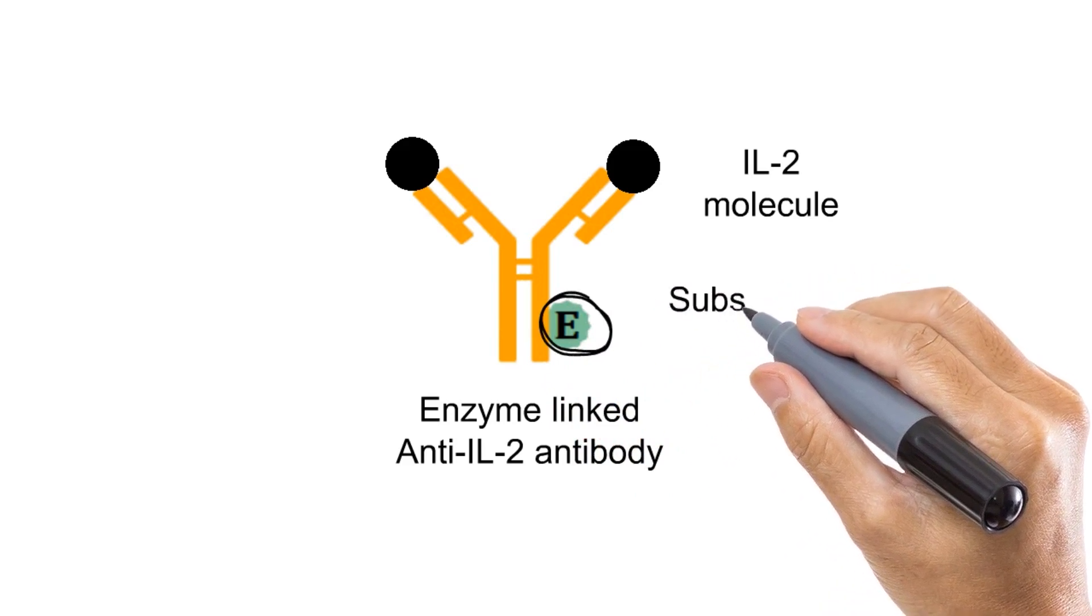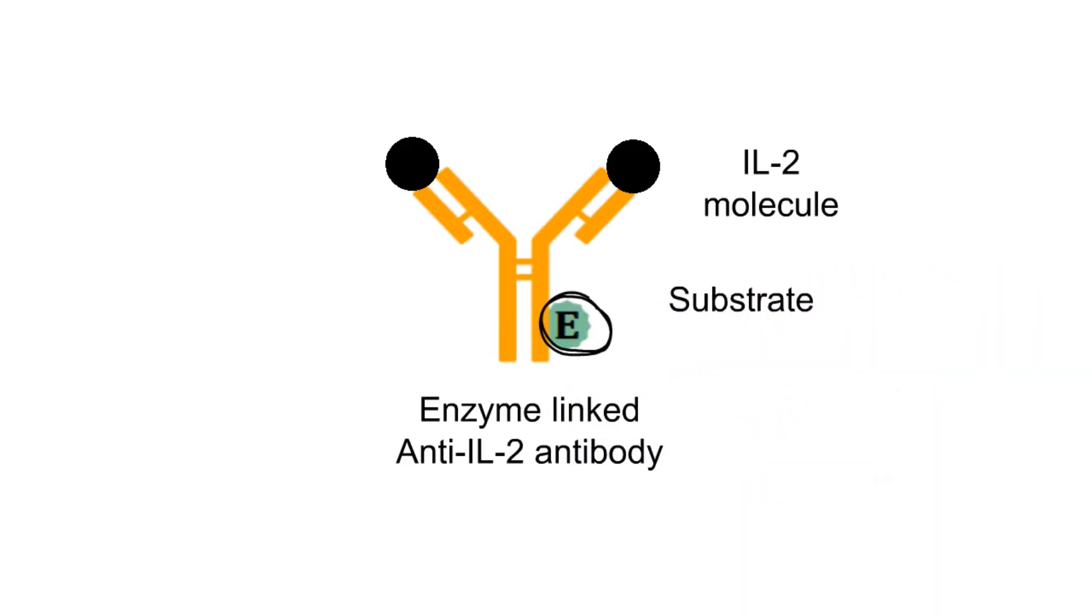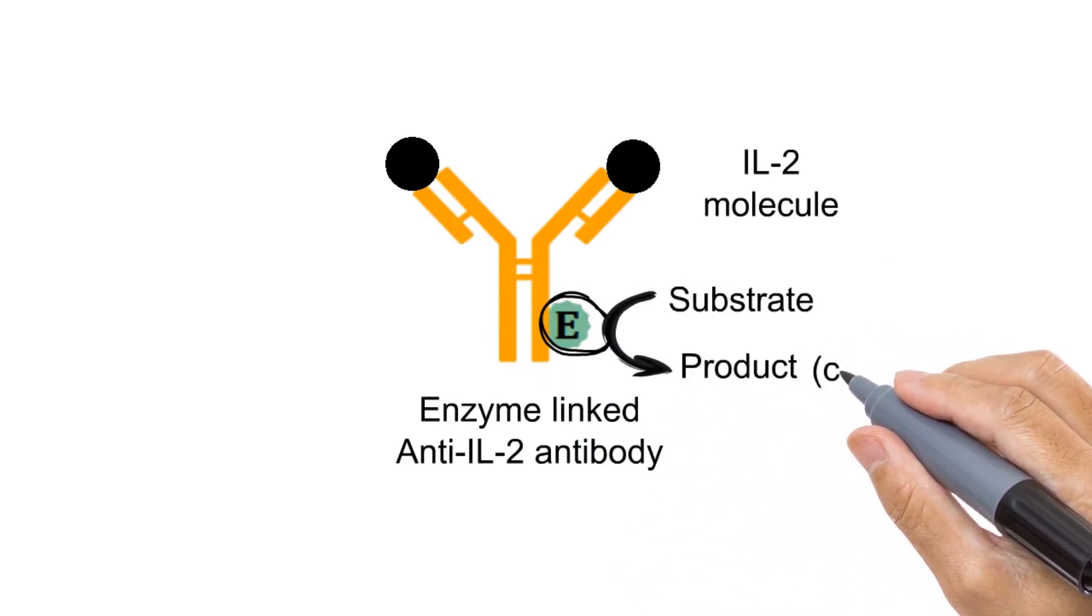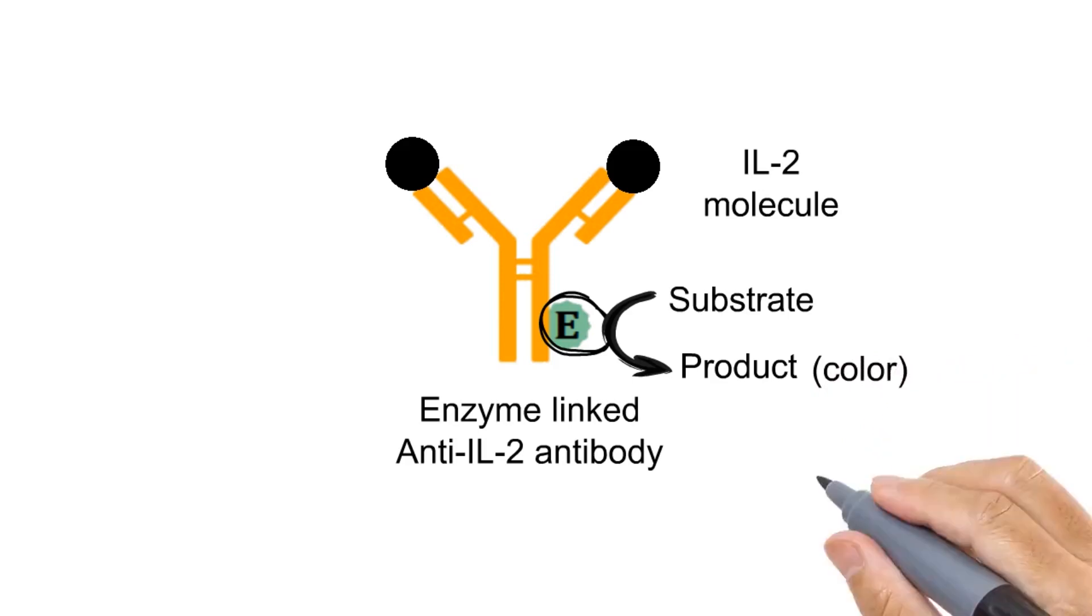Substrate of these enzymes is chromogenic. Chromogenic substrate means when this substrate is converted into the product by this enzyme, the product has a specific color. In short, the colored product is formed from substrate. So these are few basic things which we will need for ELISPOT.